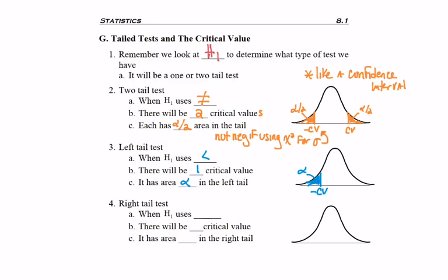And I'll just have my one critical value on the left side, which here again I wrote as negative, but it won't be negative if you're using the chi-squared table for a standard deviation test.